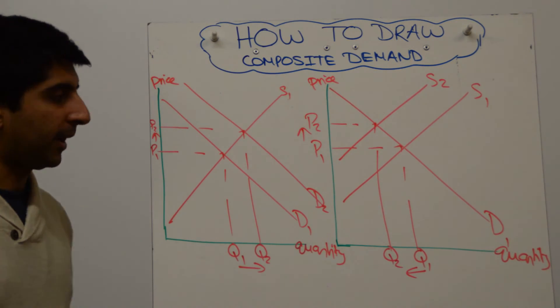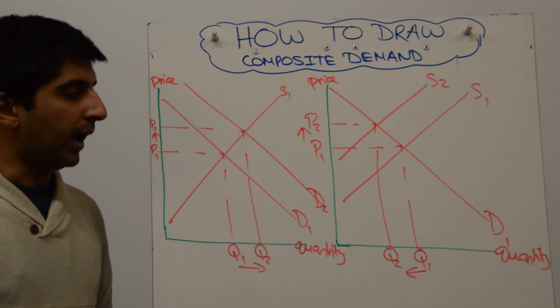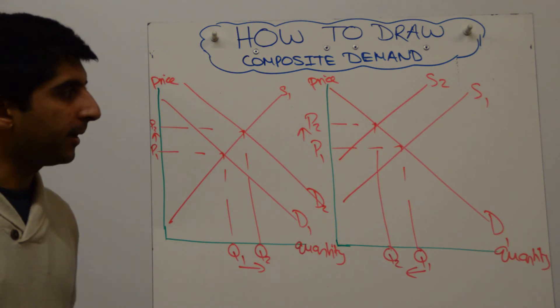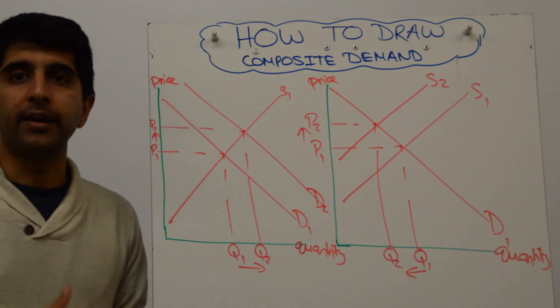Okay, so that's how you show composite demand. Demand for one product going up, which requires more of that given product, which is in composite demand, leads to a fall in the supply of another product, which also requires that input.